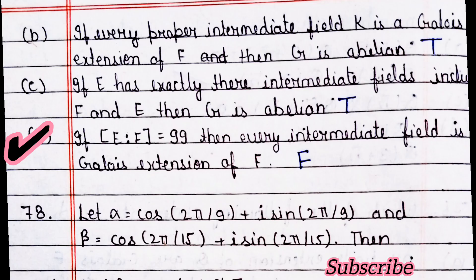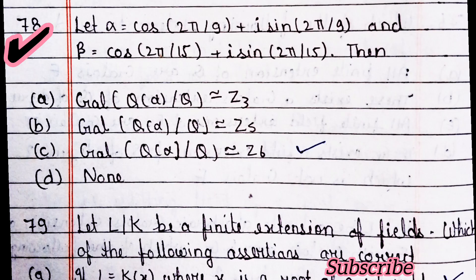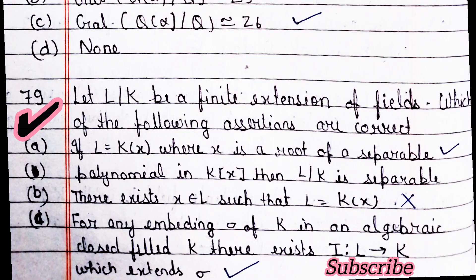Statement three: if E has exactly the same intermediate fields including F and E, then G is abelian — this is also true. Statement four: if [E:F] equals 99, then every intermediate field is a Galois extension of F — this is false. Next question: if alpha equals cos(2π/9) + i·sin(2π/9) and beta equals cos(2π/15), then — option C is right.